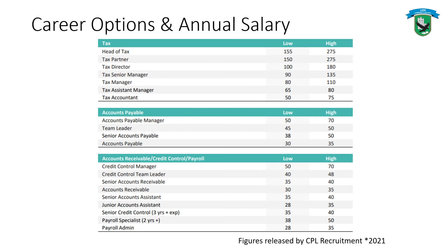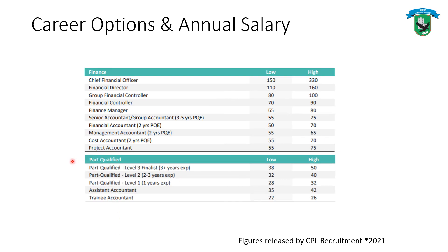In terms of remuneration for accountants, the slide shows different areas such as tax, accounts payable, and accounts receivable, along with possible annual salaries. The lower rate of pay would be around €30,000 per year and the higher rate around €35,000. For those working in a private accountancy firm and working their way up, the part-qualified salary ranges are also shown, giving an idea of what you'd be earning if you pursued that route after college.